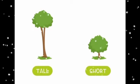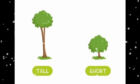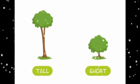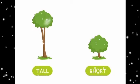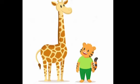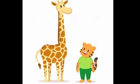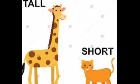Now you can observe more pictures and tell who is tall and who is short. Here we have a giraffe and a tiger — a baby tiger. The giraffe is very tall. The tiger is short. In the second picture, you can also observe tall and short.